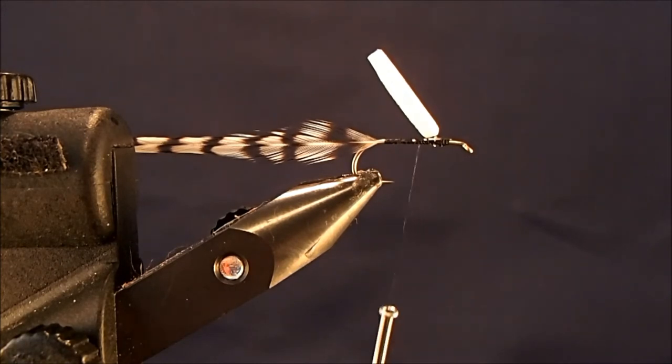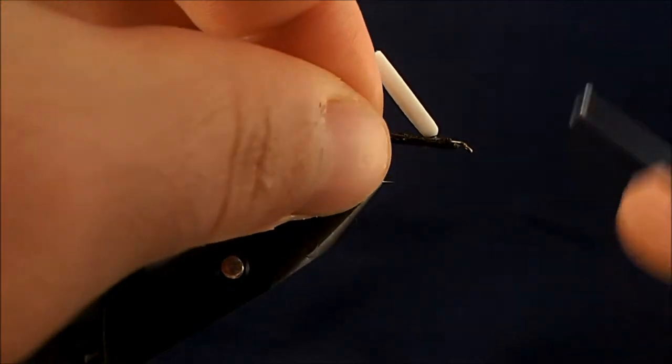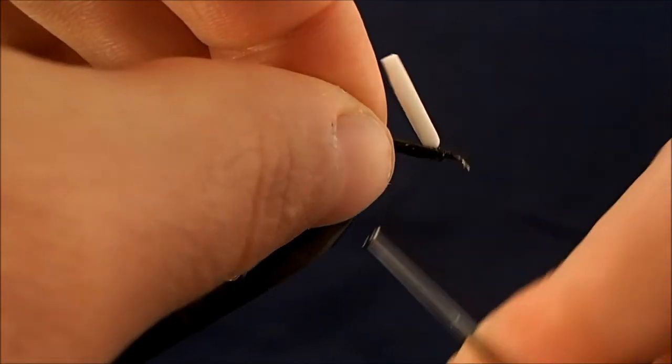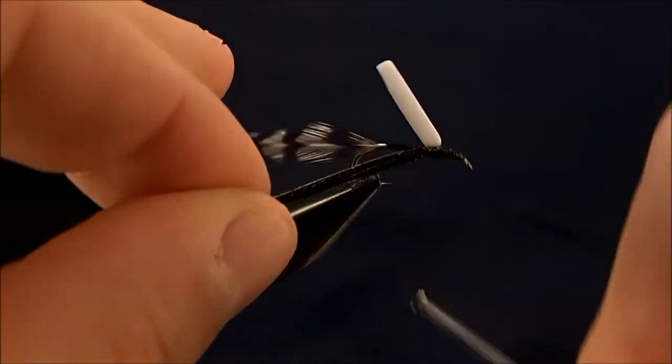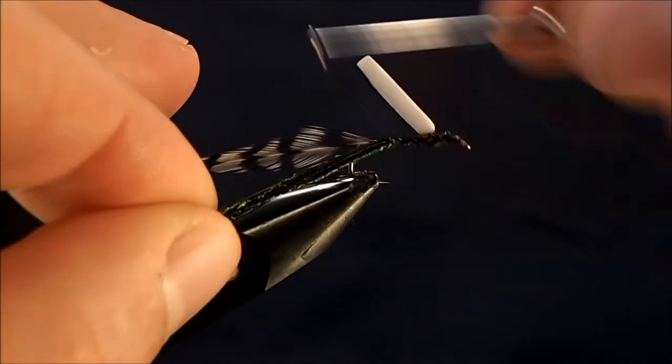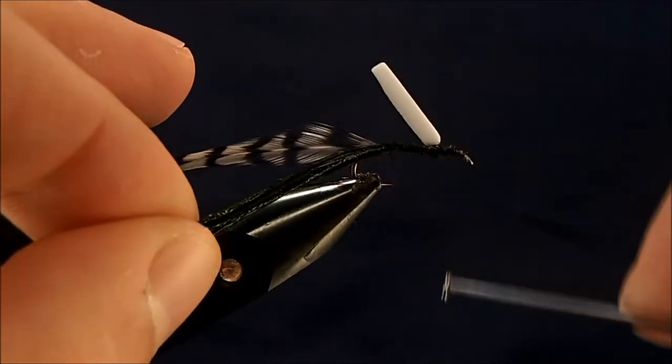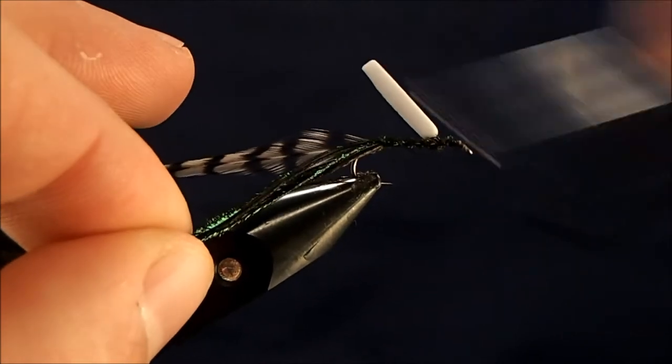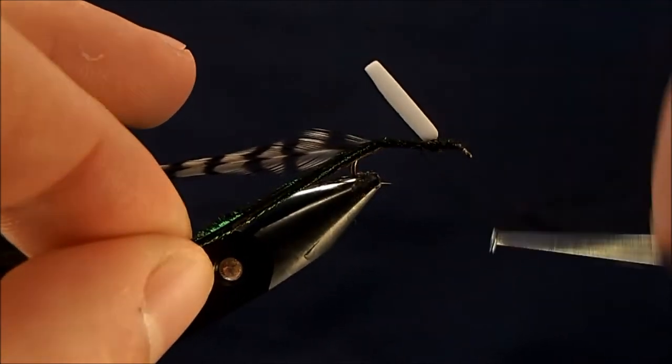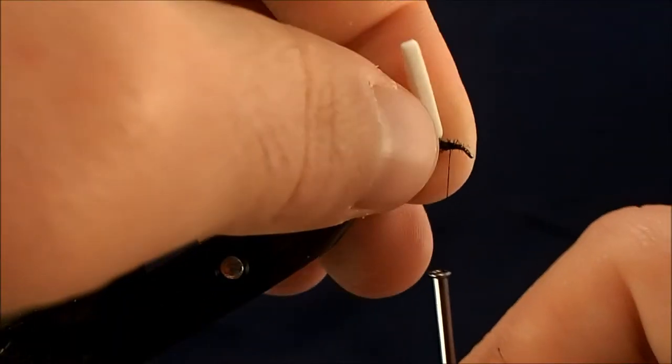I'll get my strands here and then I'm just going to clip the bottom and tie that in to the side of the hook. Make sure it's secure all the way down and then bring that back up to the front.